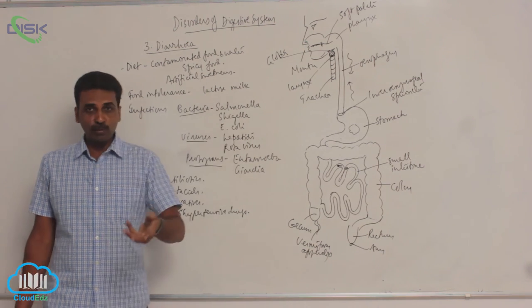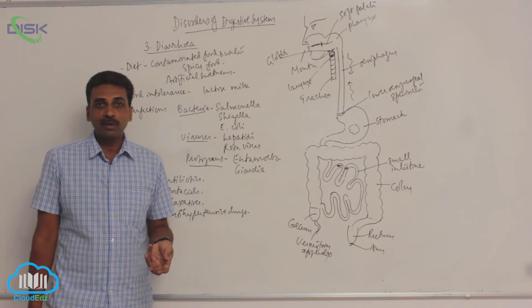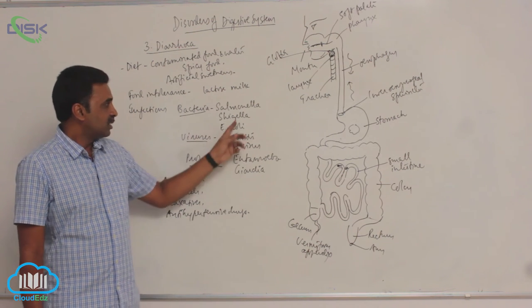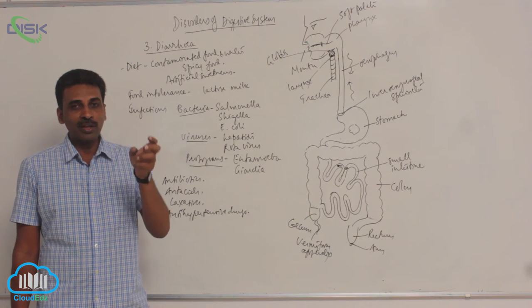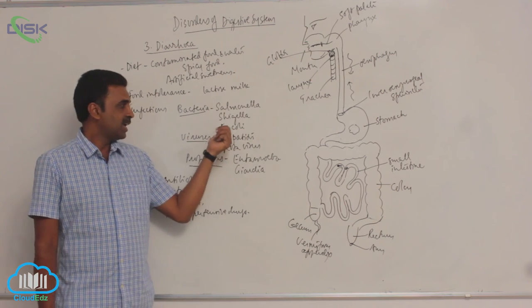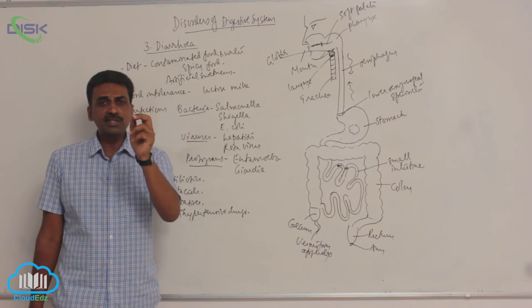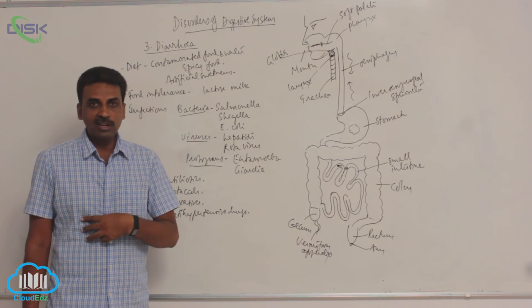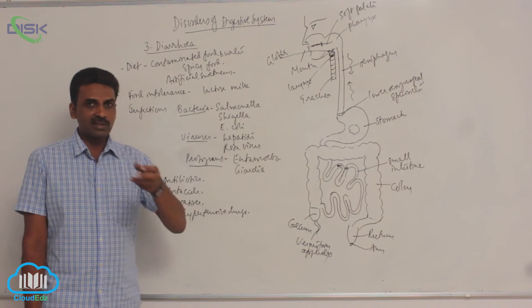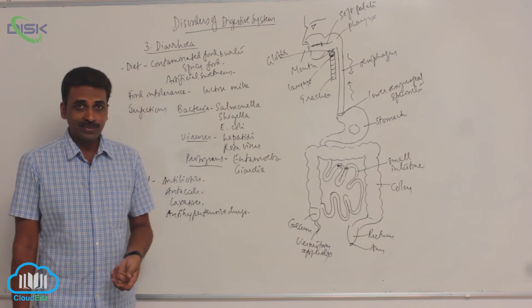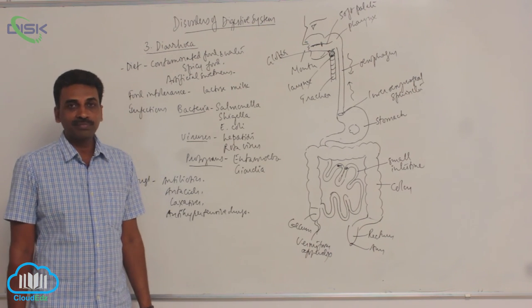We know several organisms when they enter into our body. For example, Salmonella, Salmonella typhi, Salmonella paratyphi, causes typhoid and paratyphoid. Paratyphoid is a milder form of typhoid. Shigella, Shigella dysentery, which is present on fish that is not properly cooked or improperly stored fish. And Escherichia coli. These bacteria, they cause diarrhea. Likewise, hepatitis virus is a virus which affects the liver.